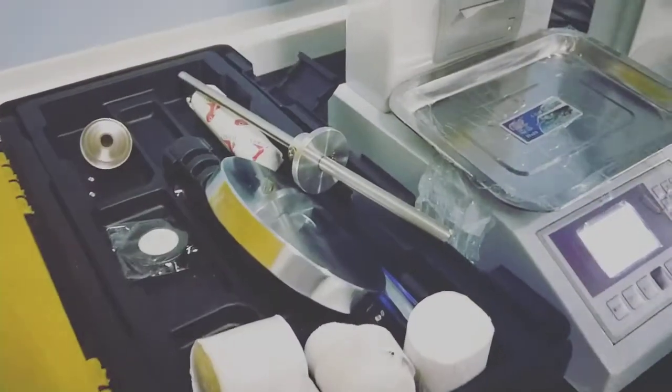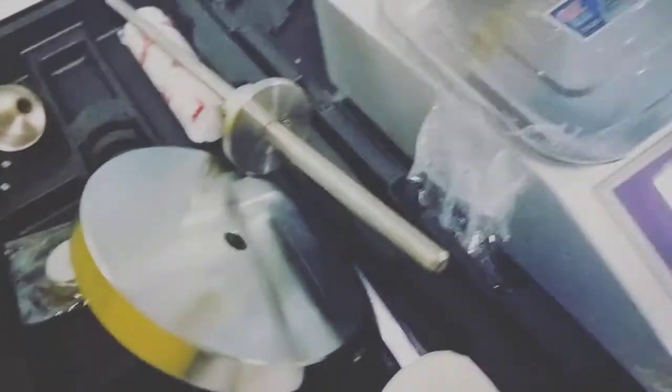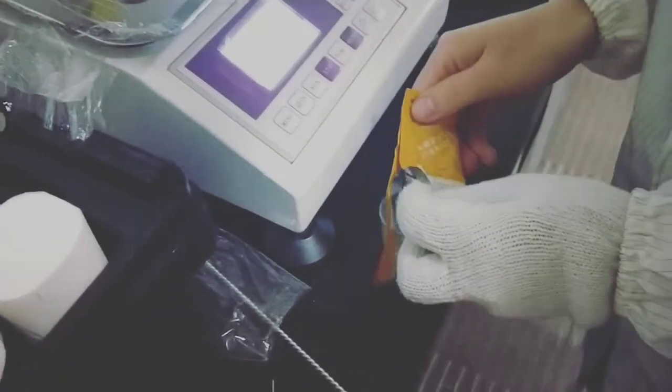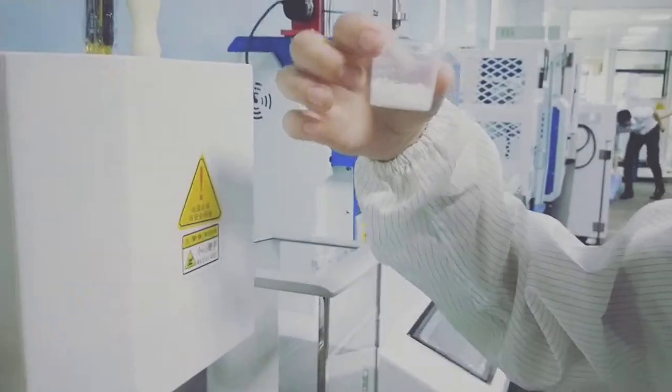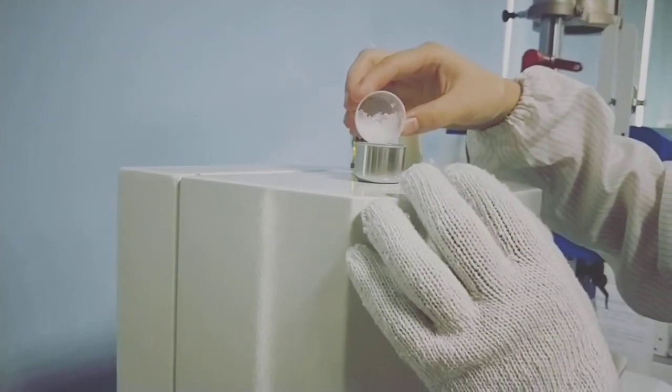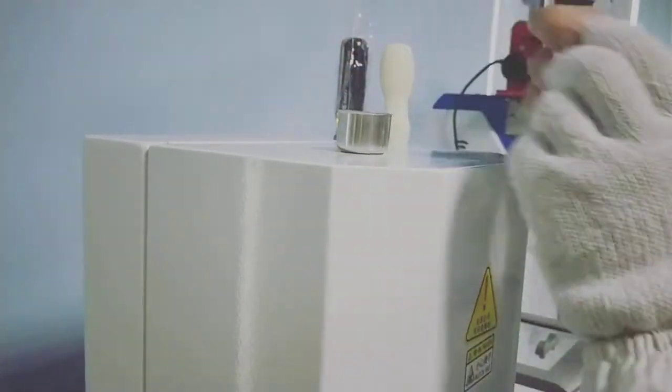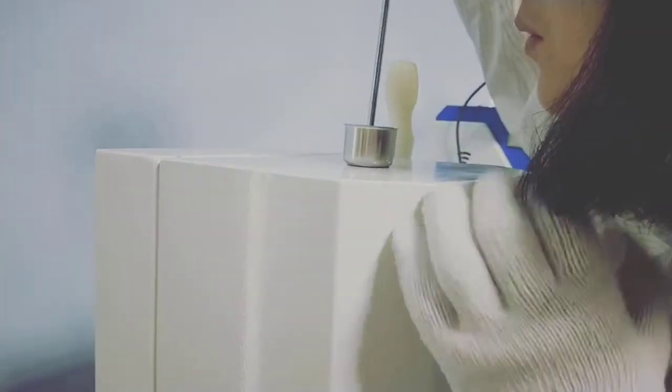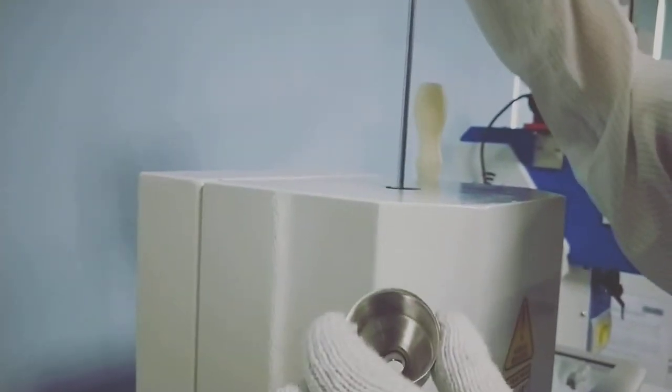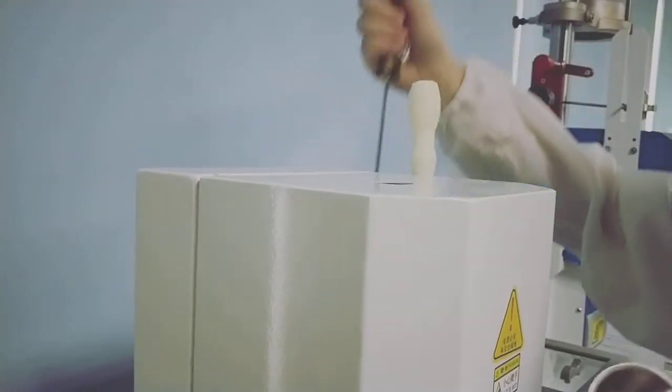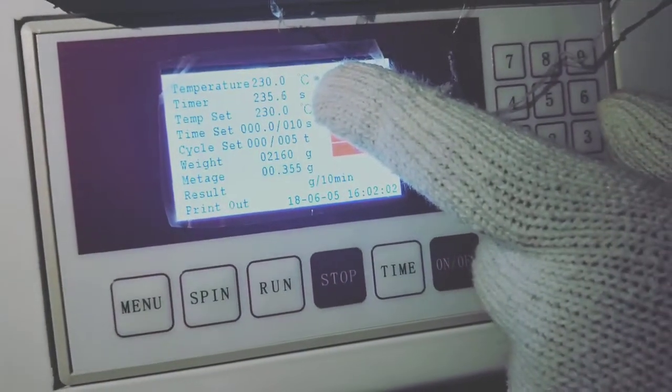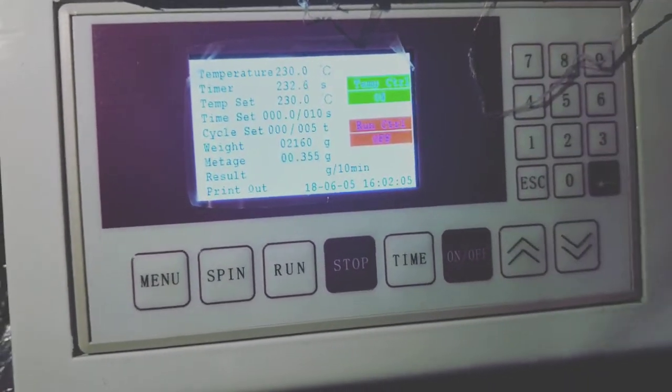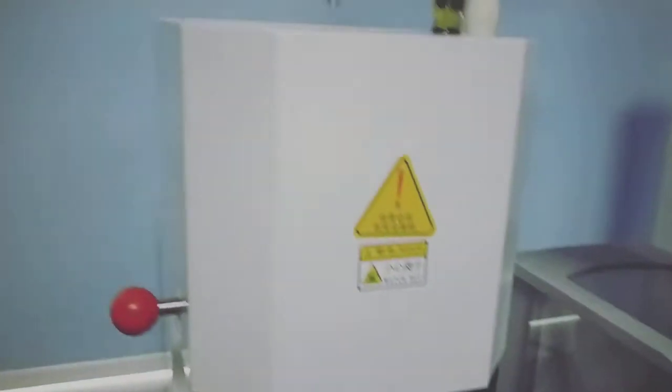Then we add sample into the hole. Normally we need max 7 to 8 grams each test. This is the sample each time we use. And use this one to add the sample into this hole. Press time key. It will automatically calculate 4 minutes, 240 seconds. Then we just wait. And then add the sample.